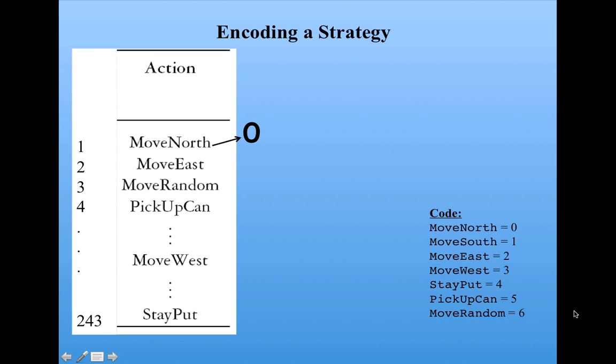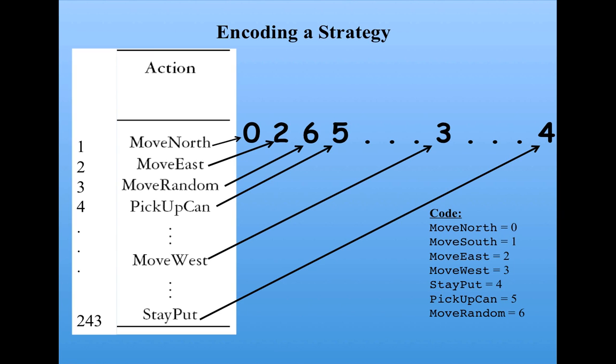Then I can encode this particular strategy by substituting the code number for each of the actions in the list. So now a 0 here in this first position means that the very first situation, that is all empty, corresponds to the action move north. A 6 here means that the third situation, whatever that was in our ordered list, corresponds to the action move random, and so on. And this way, we now have a list of numbers that represents a specific strategy.